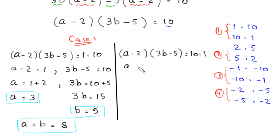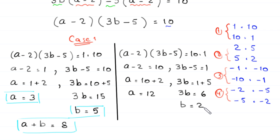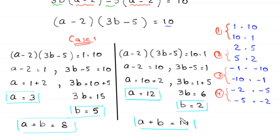In the second part of case 1, (a minus 2)(3b minus 5) equals 10 times 1. So a minus 2 equals 10 and 3b minus 5 equals 1. This gives a equals 12 and 3b equals 6, so b equals 2. Therefore a plus b equals 14. This is the second solution.